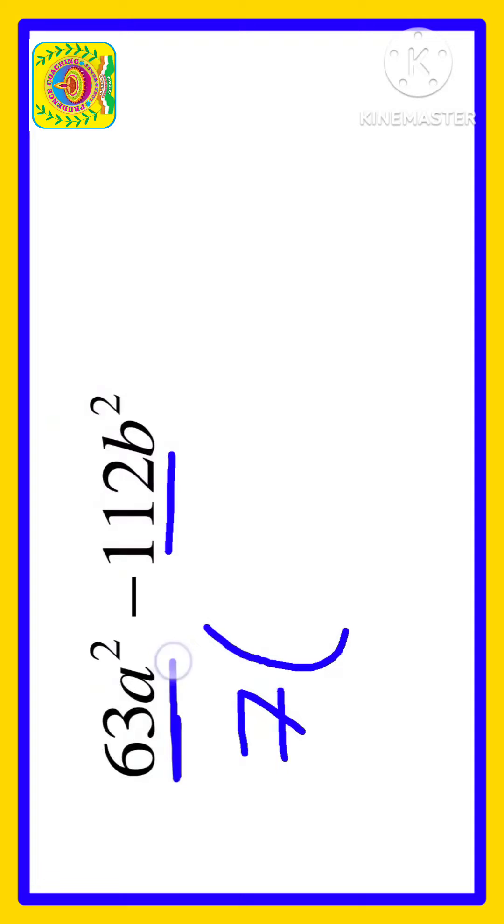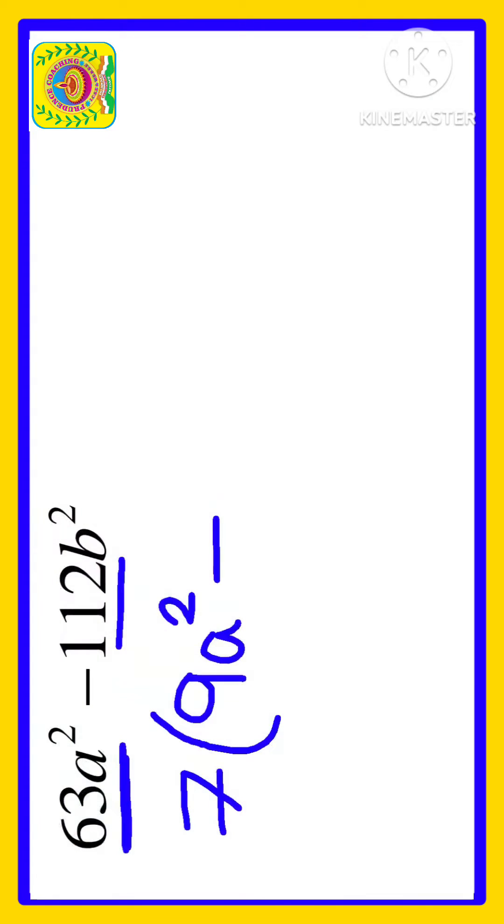If we take seven common from the first term, we will be left with 9 because 7 × 9 = 63, and a² as it is. Minus—we know 7 × 16 = 112, so in place of 112 we can write 16, and we have b². Write it as it is.